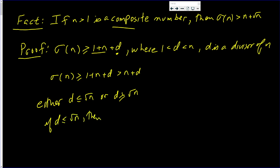If d is less than the square root of n, then d is a divisor. That means d times something equals n. Call it n over d. This is bigger than the square root of n.